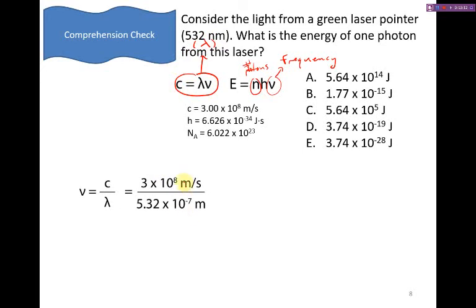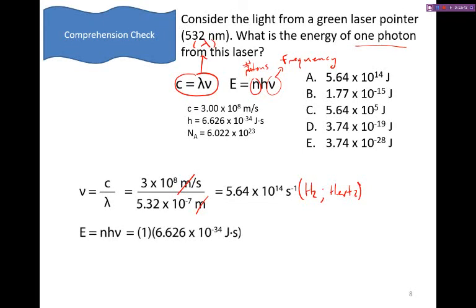When we do this, our units of meters will cancel out and we're left with units of inverse seconds. You'll see sometimes this is also referred to as Hertz, spelled H-E-R-T-Z. We can then take that frequency and plug it into our equation for energy. We know that there's one photon of light. Planck's constant is given there. And then using the frequency, we can multiply those together. Where our seconds and our inverse seconds cancel out. And we're left with 3.74 times 10 to the minus 19 joules. And that's the energy of one single photon.